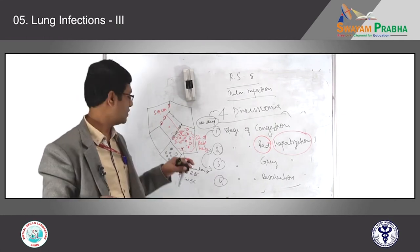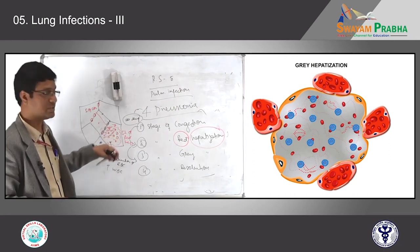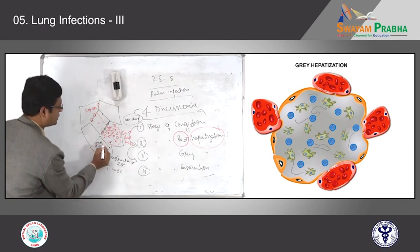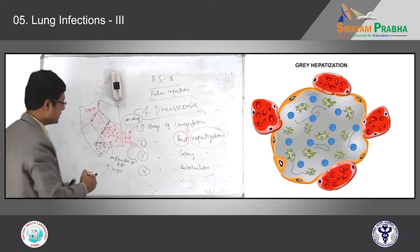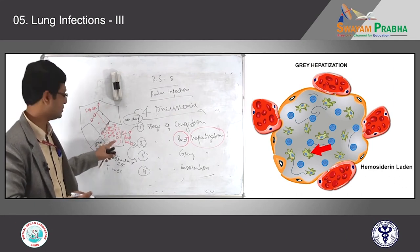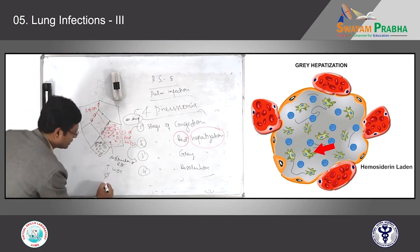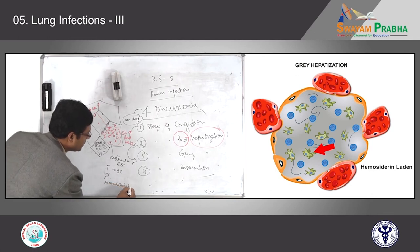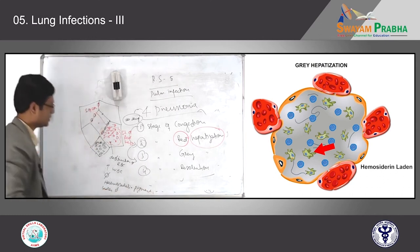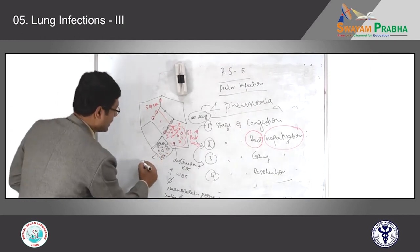In grey hepatization, along with the RBCs, more and more white blood cells accumulate — these are nucleated cells. The RBCs in the alveolar lumen are destroyed. With destruction of red blood cells and accumulation of white blood cells, the lung loses its redness and becomes grey color — that's why it is grey hepatization. Macrophages engulf the hemosiderin pigment raised by the destruction of RBCs, so in grey hepatization you will see many macrophages and hemosiderin-laden macrophages.